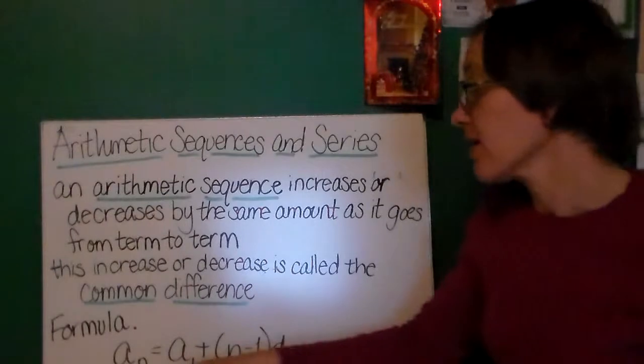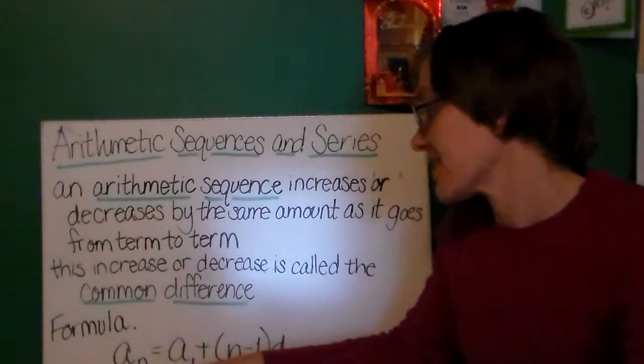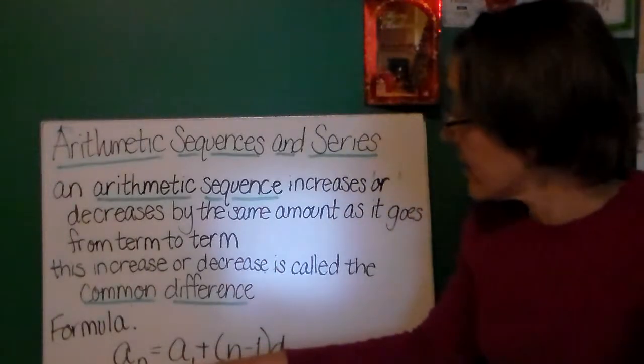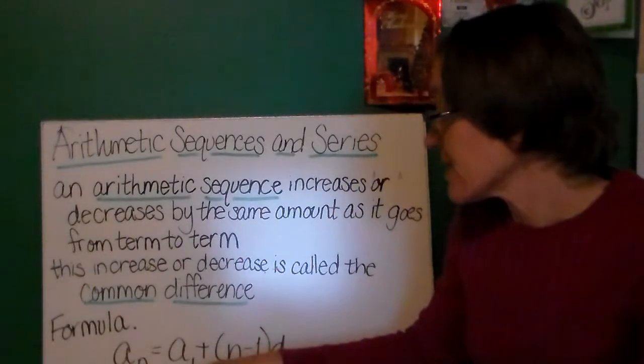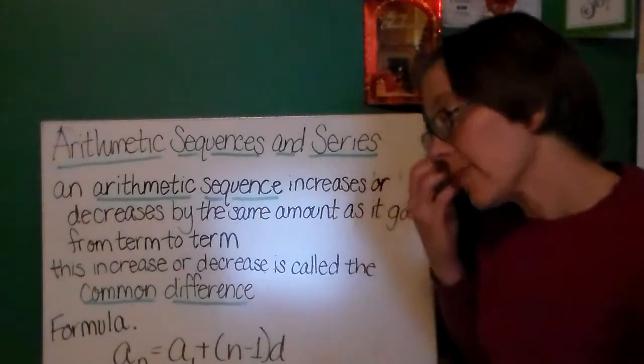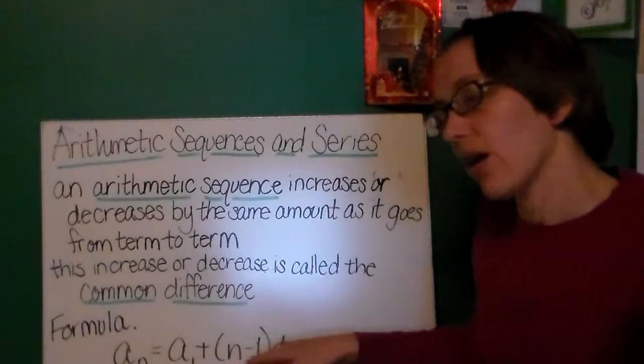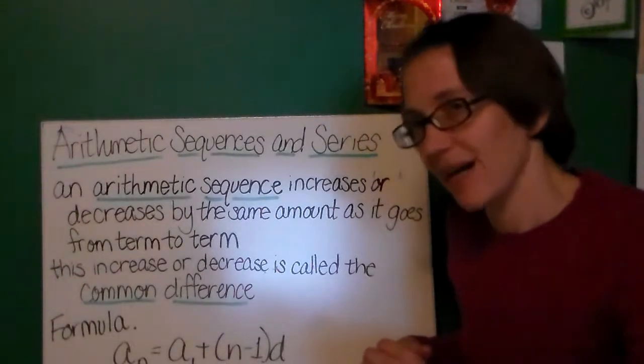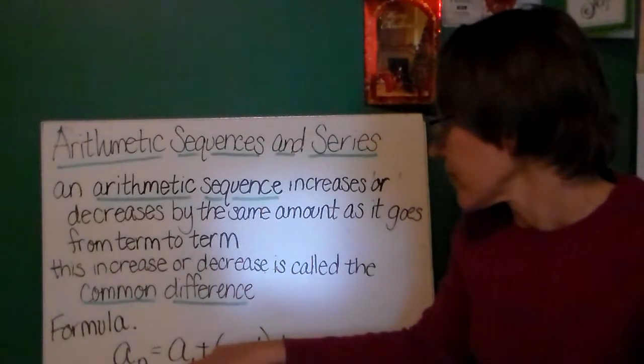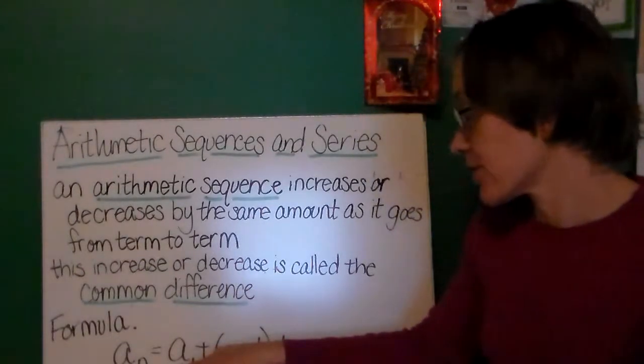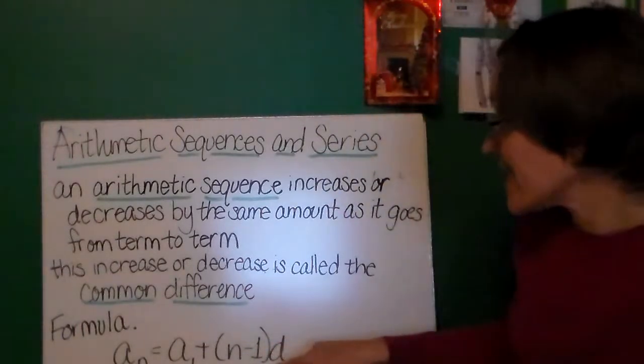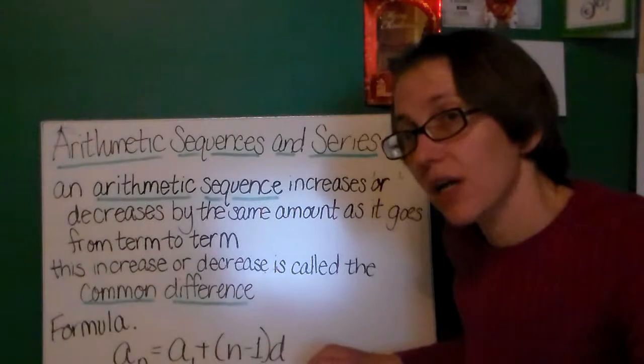And the formula, which hopefully we'll derive in class for the arithmetic sequence, is a sub n, to get any term, equals a sub 1 plus n minus 1 times d. Remember to use the order of operations and to always subtract n minus 1, then multiply by d. So, here a sub 1 represents the first term, n is the number of the term that you are on, and d is that common difference.